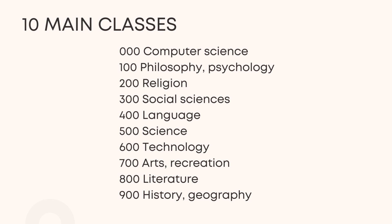Here are the 10 main classes: 000 Computer Science, 100 Philosophy and Psychology, 200 Religion, 300 Social Sciences, 400 Language, 500 Science, 600 Technology, 700 Arts and Recreation, 800 Literature, 900 History and Geography.